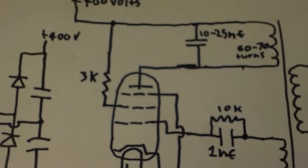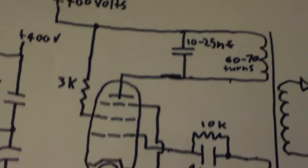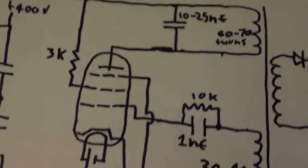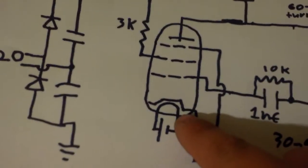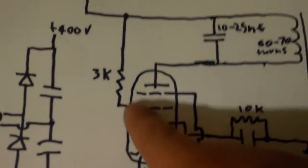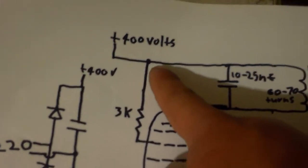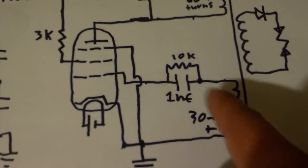And it uses a pentode tube or a tetrode. It just has one of the grids right here attached to the cathode. It has the second grid attached to B+, and the third grid is the one used in the feedback portion.